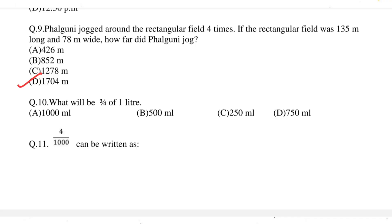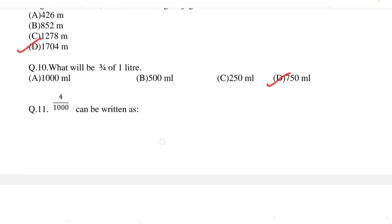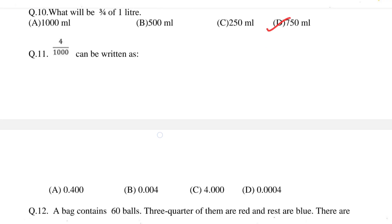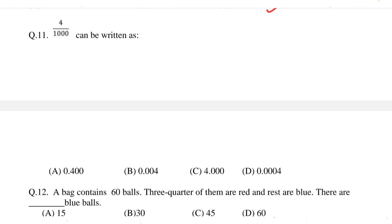Question 10: what will be 3/4 of 1 litre? The correct option is option D, 750 ml. Question 11: 4 by 1000 can be written as? The correct option is option B, 0.004.